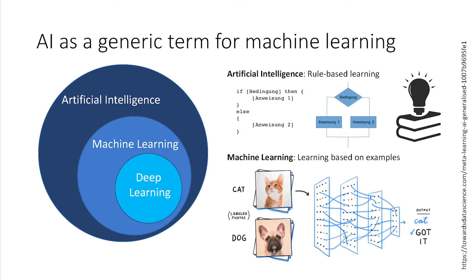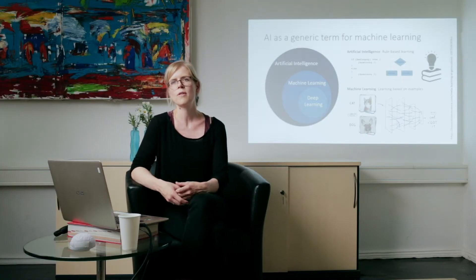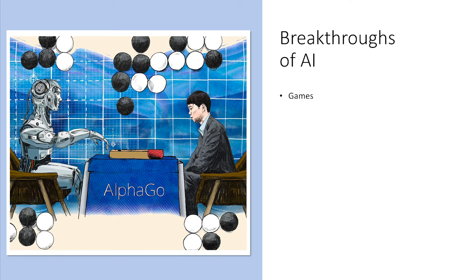that AI is the science and engineering of making intelligent machines. A similar but broader definition is given by Wikipedia: AI is the theory and development of computer systems able to perform tasks normally requiring human intelligence, such as visual perception, speech recognition, decision-making, and translation between languages. Two important terms in those definitions are intelligence and machines or computer systems. AI is mainly about creating computer programs that solve tasks usually requiring some form of human intelligence, and since those tasks are very diverse, there are also very diverse applications of AI.